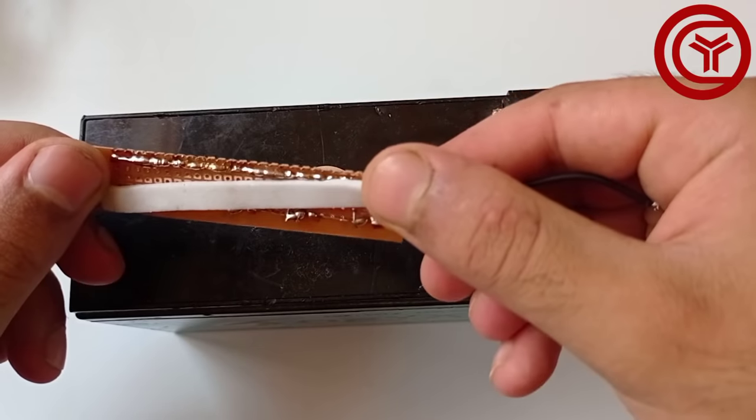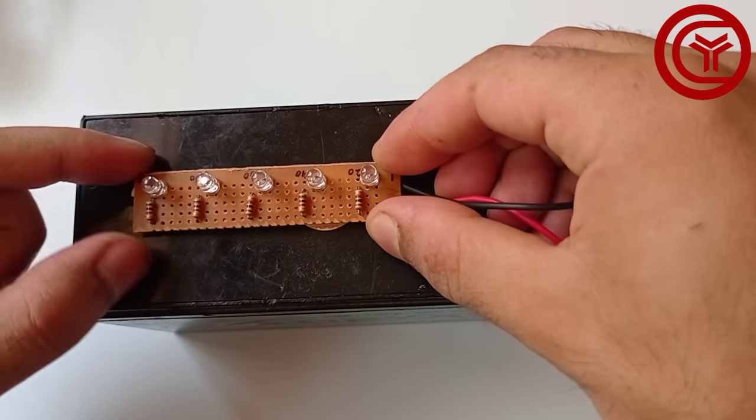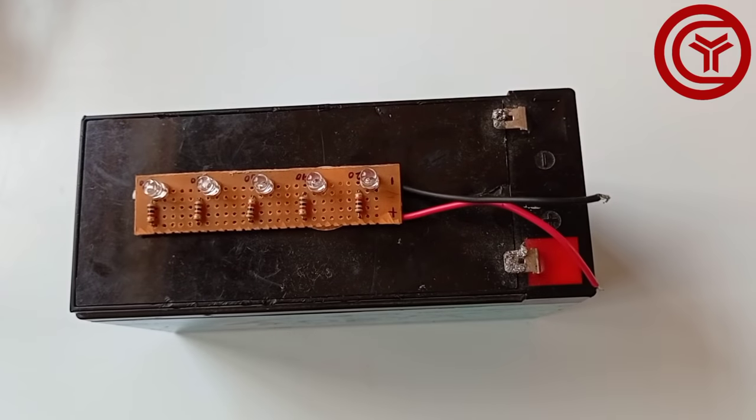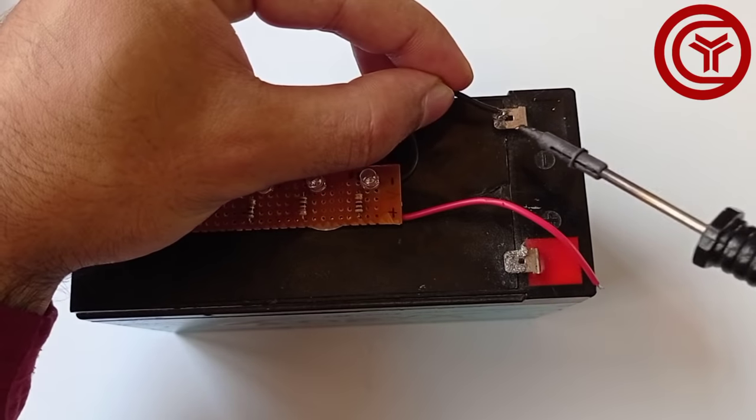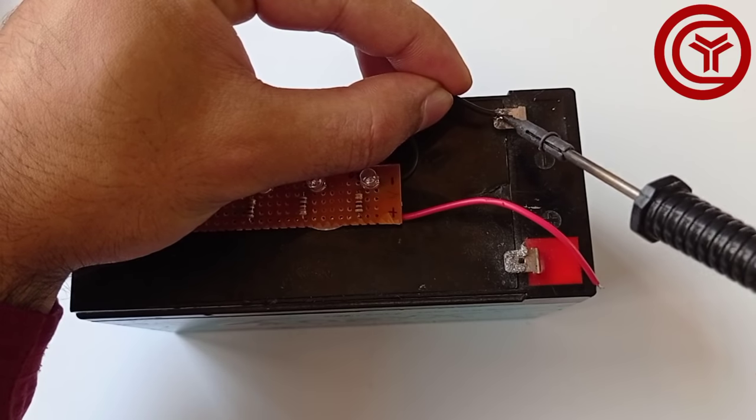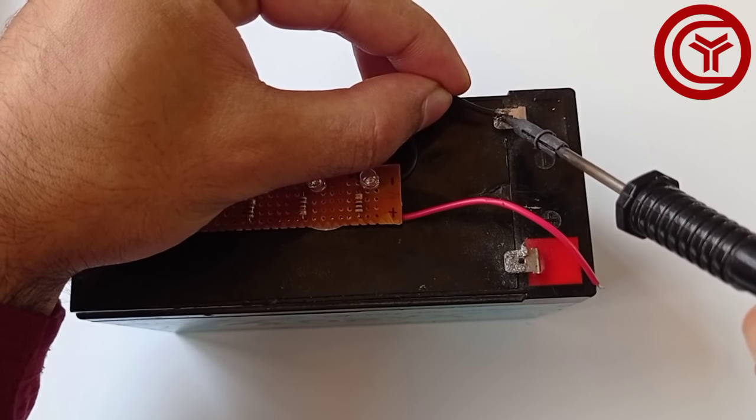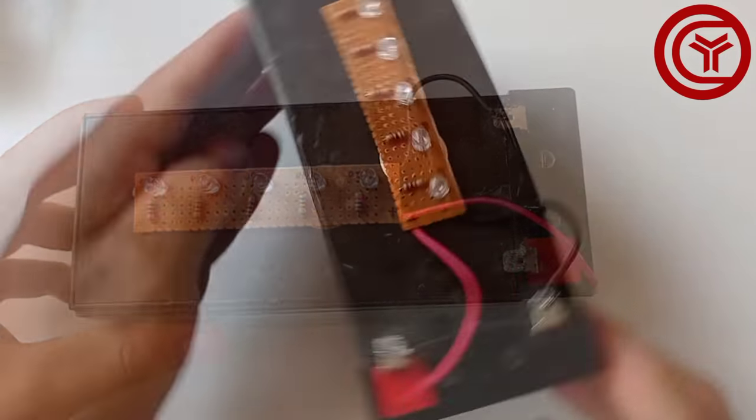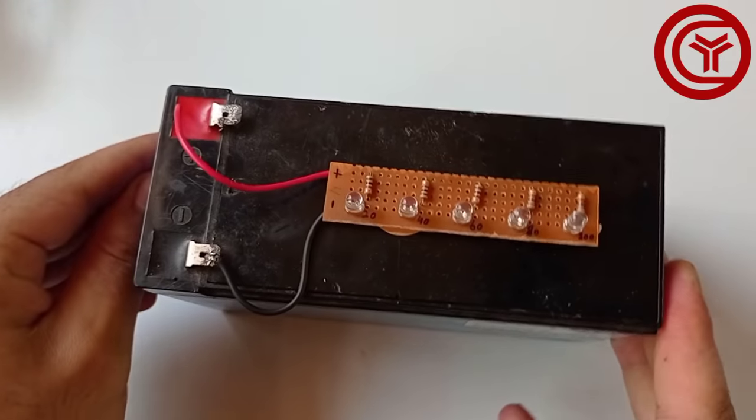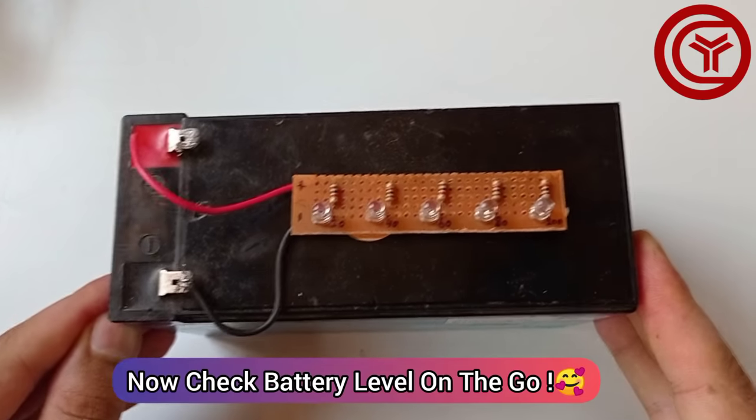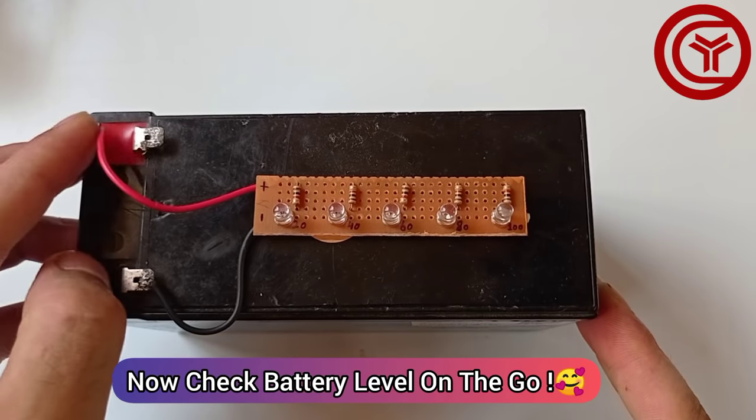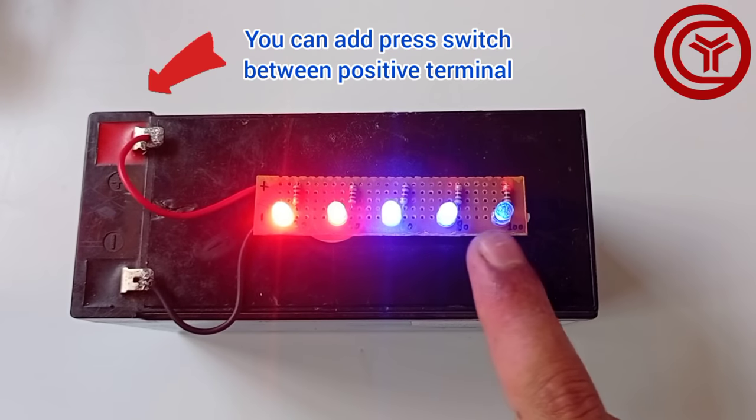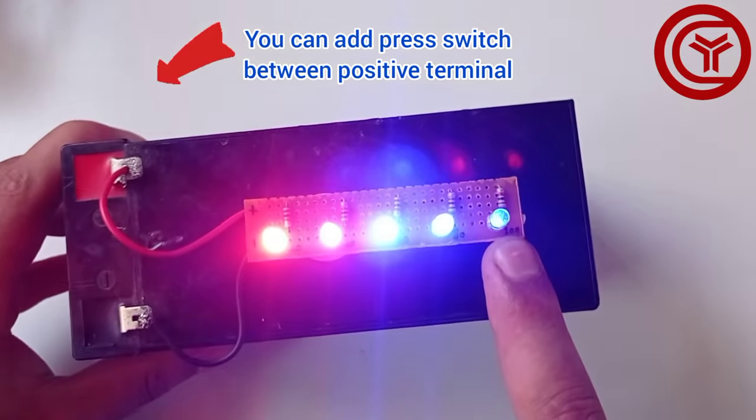Paste the board on the battery. Solder negative wire with battery negative, and connect positive wire whenever you would like to check battery charge level. You can also add switch between positive side.